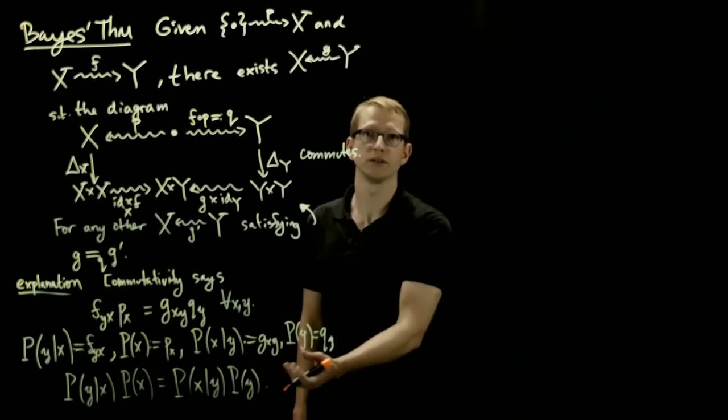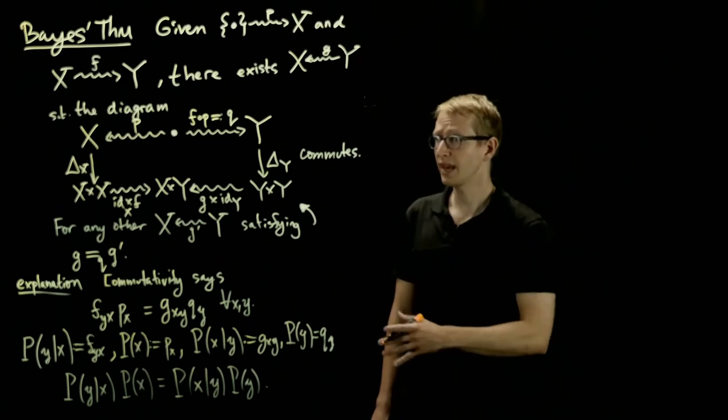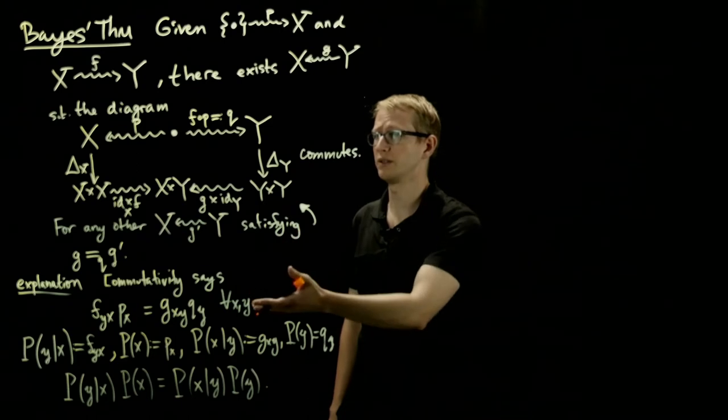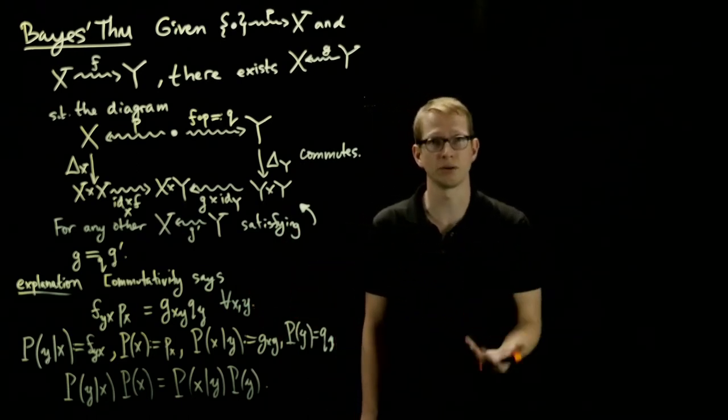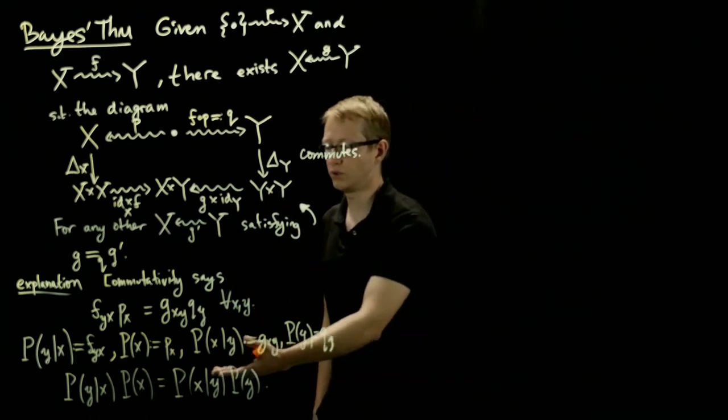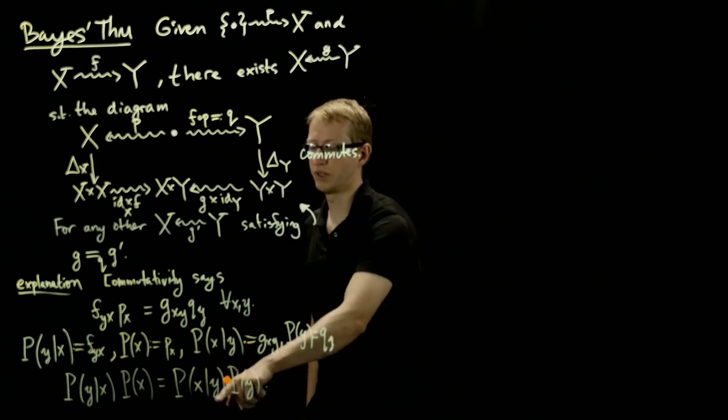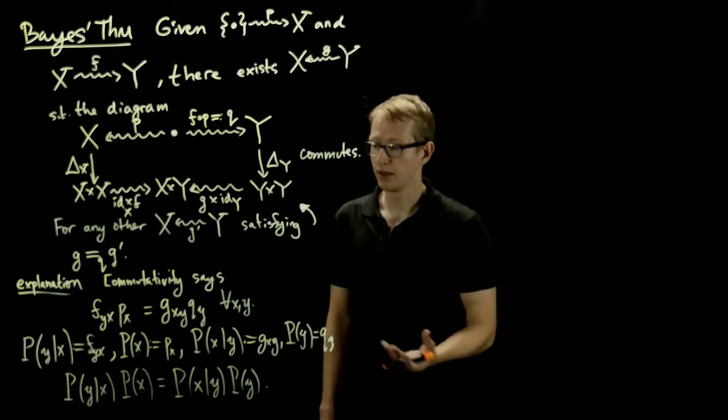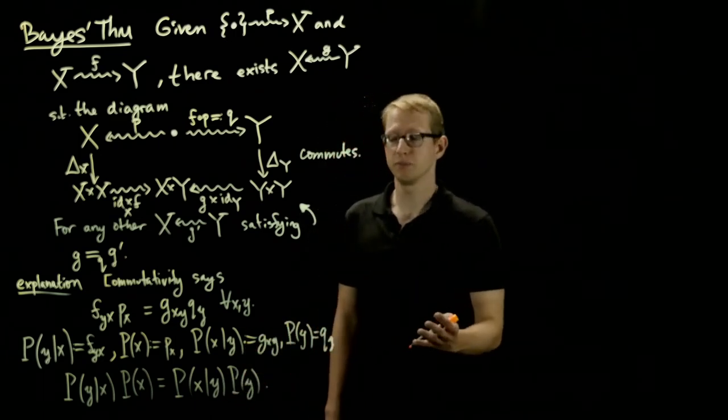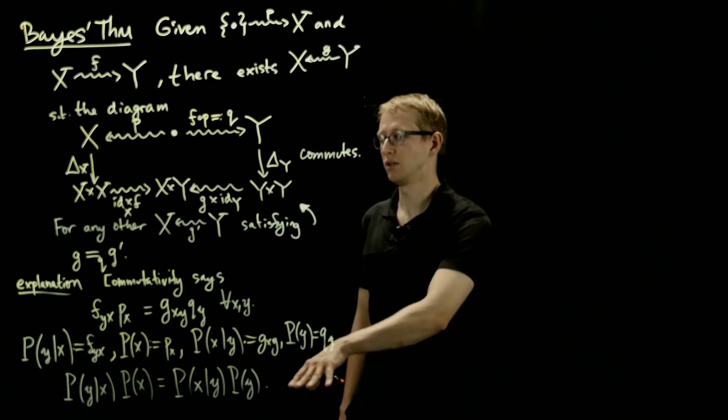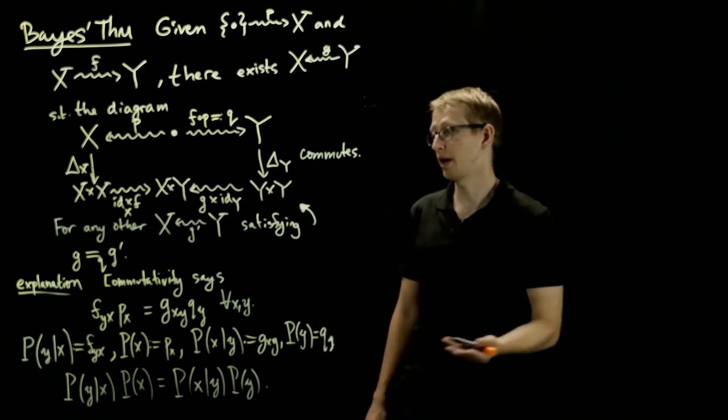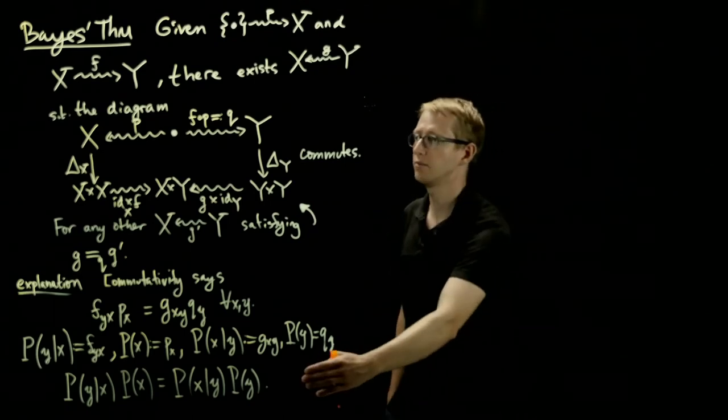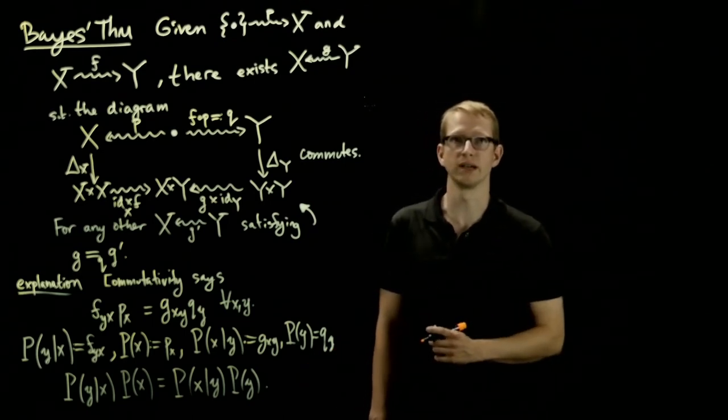At least when your events are singleton sets. And with the appropriate definitions, you can also extend this, or you can look at what this diagram means because these are corresponding to probability measures, and you can also define a notion of conditional probability where you replace this point with a subset, and you can use the probabilities on your corresponding spaces to make sense of what this means when x is replaced by some event a, perhaps, and y is replaced by some event b. Nevertheless, the same equation still follows from commutativity of this diagram.